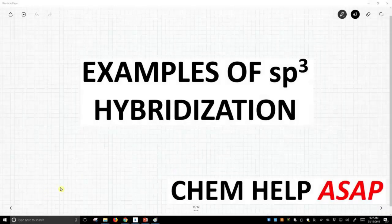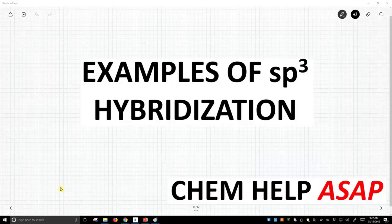Hello from Chem Help ASAP. Now that we understand the different geometries and bond angles we encounter with hybridization, let's see specifically some examples of sp3 hybridized atoms.